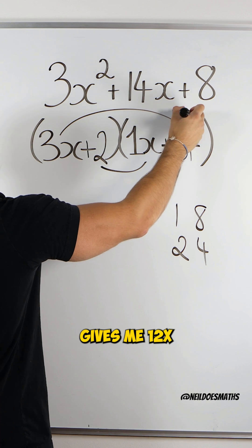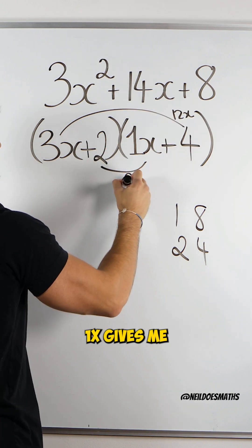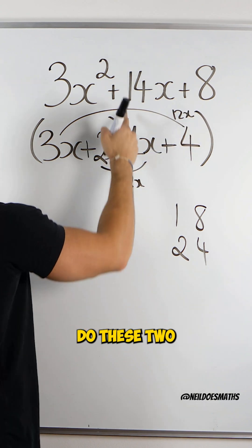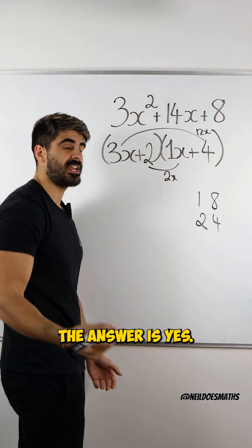Now, 3x times 4 gives me 12x, and 2 times 1x gives me 2x. You have to check. Do these two add to give you 14x? The answer is yes.